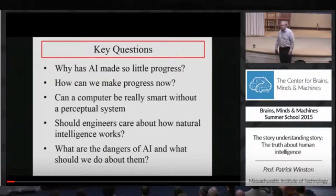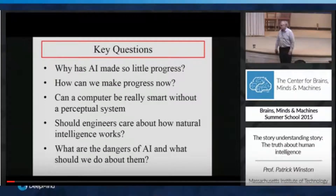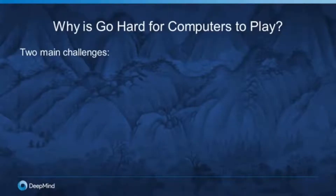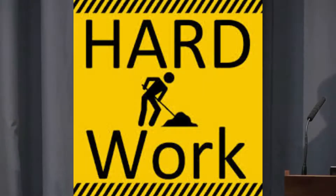Why is Go so hard for computers to play? There are two main challenges. One is that the search space is really enormous. In Go, on average there are around 200 possible moves, whereas in chess an average position has around 20 moves. So Go has an order of magnitude bigger branching factor than chess.